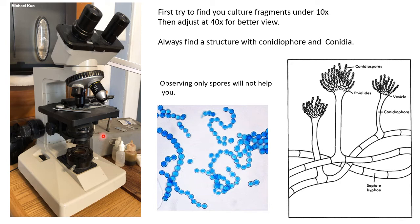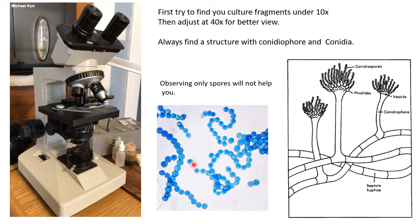Once your slide is ready, first adjust it under the 10x objective. Screen the whole slide to find the best area with culture fragments. After adjusting under 10x, gently change to a higher objective for a closer view. Always look for a structure with both conidiophore and conidia — a proper, complete structure. If you are only seeing spores, that view is not suitable to show an examiner or use for a project.